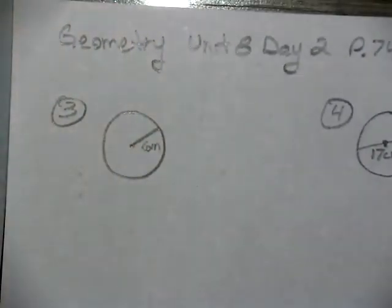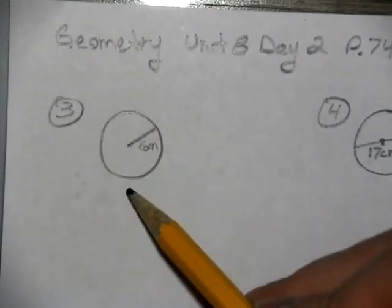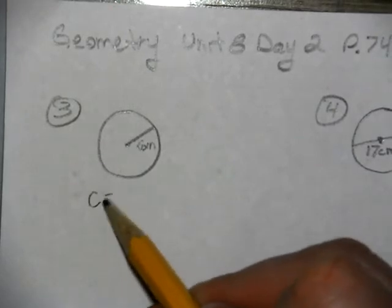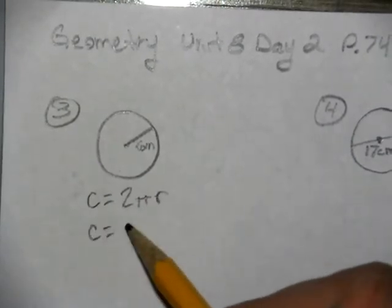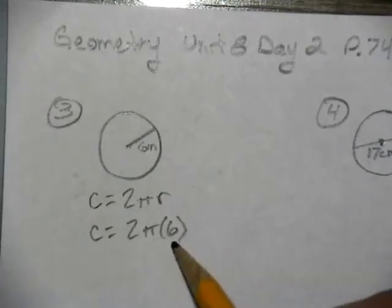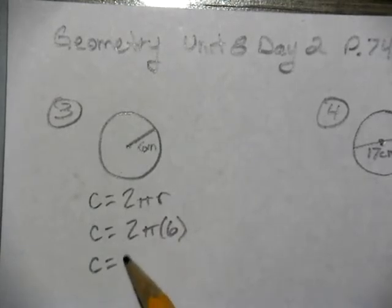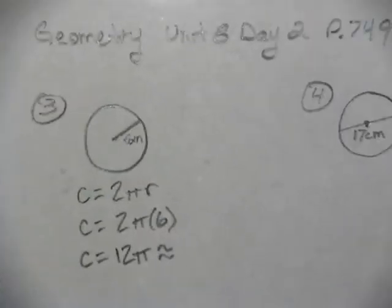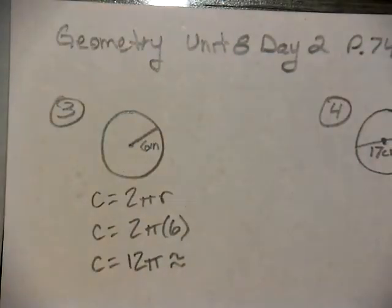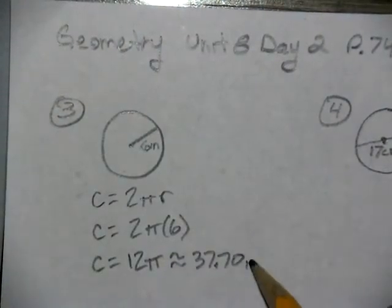We're going to look at finding the circumference of a circle that has a radius of 6. We'll start out with our formula of 2πr. The circumference brings in 6 for the radius, so the exact answer is 12π. Using our calculator, we can approximate that as 37.70 inches.